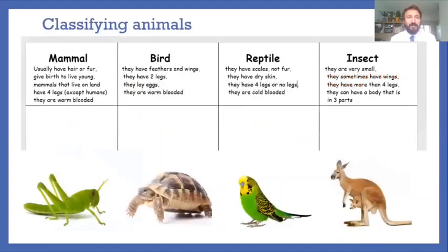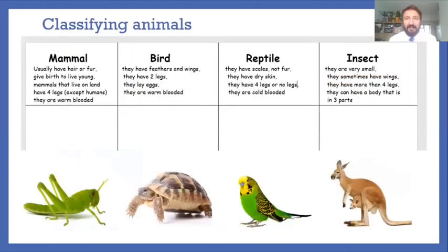So let's move forward and it's time for you to have a little go at classifying some animals yourself. We've got a sort of a grasshopper down here, a tortoise that appears to be pulling a wheelie, a budgie there and a kangaroo. Now here we go. Mammal: they usually have fur or hair, they give birth to live young, animals that live on land have four legs except humans, they are warm blooded. We have a bird: they have feathers and wings, they have two legs, they lay eggs, they're warm blooded.